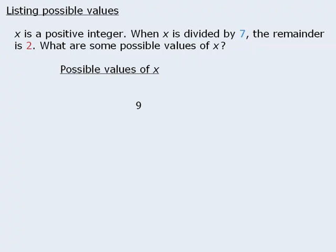So one possible value is 9. 9 divided by 7 equals 1 with remainder 2. Perfect. Another possible number is 16. What are some other ones? For example, is there a number less than 9 that has remainder 2 when we divide it by 7? Yes. 2 satisfies this condition because when we divide 2 by 7, we get 0 with remainder 2.